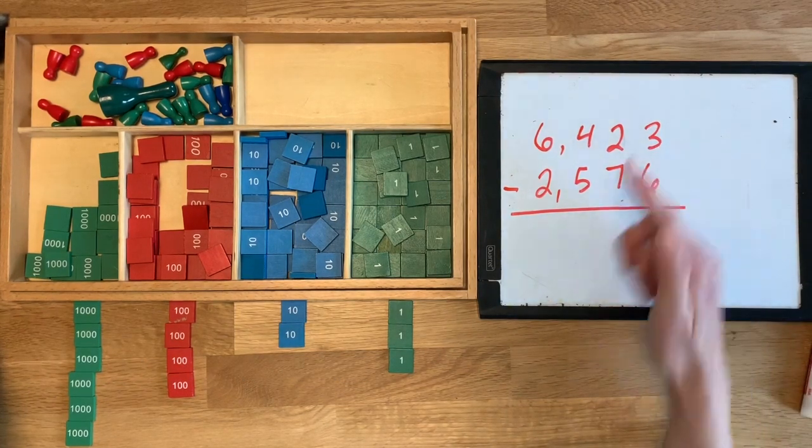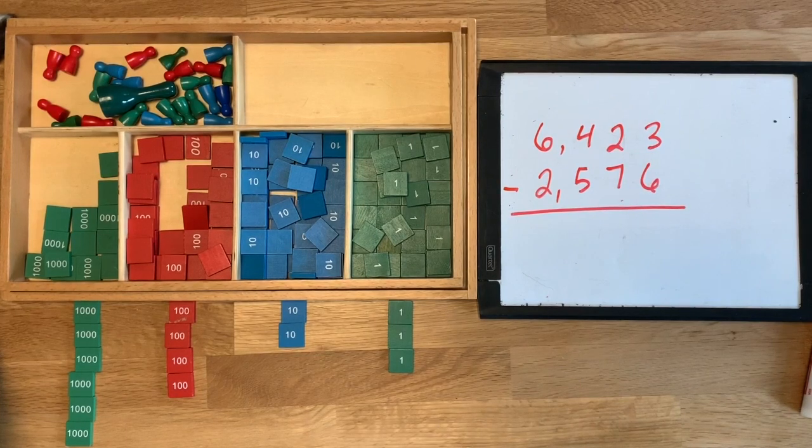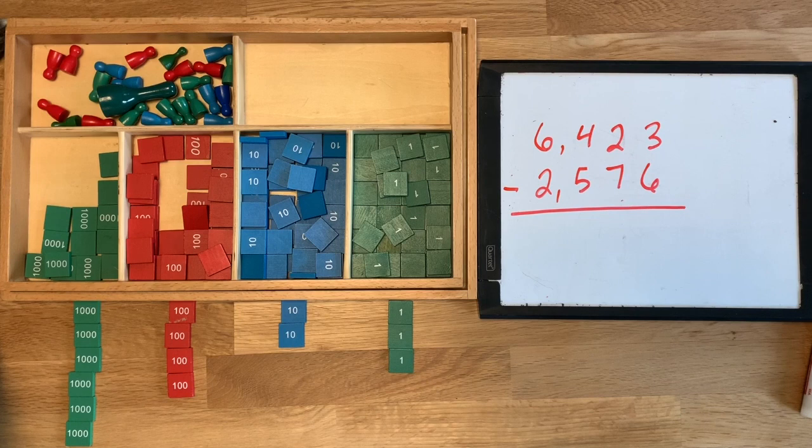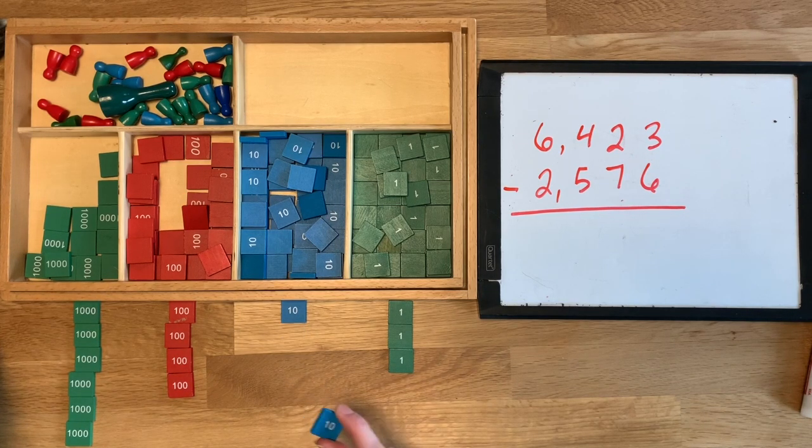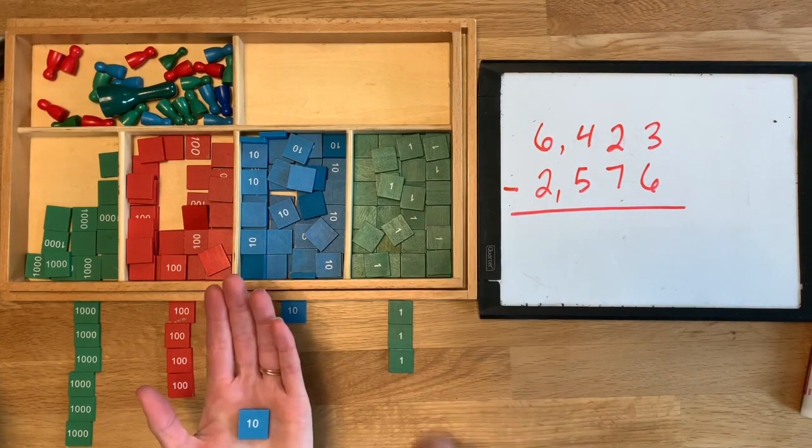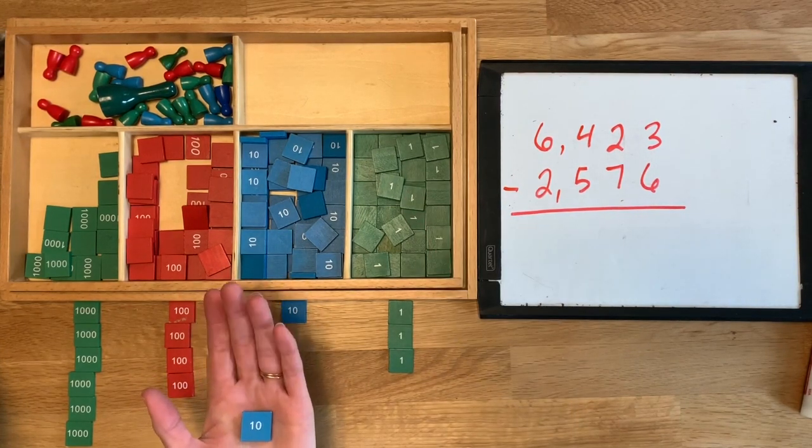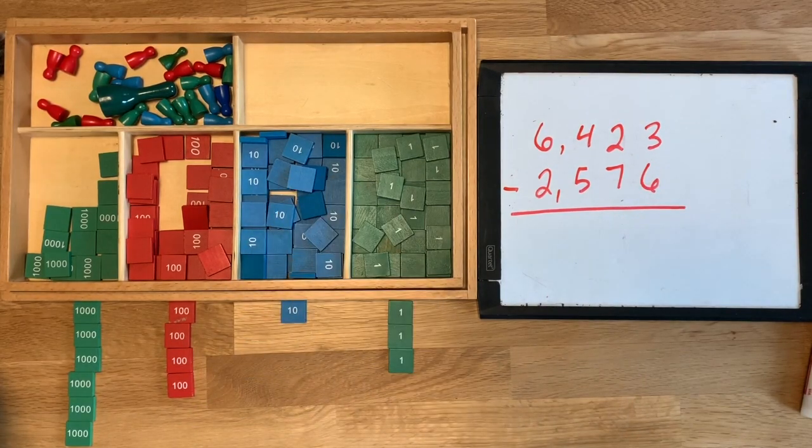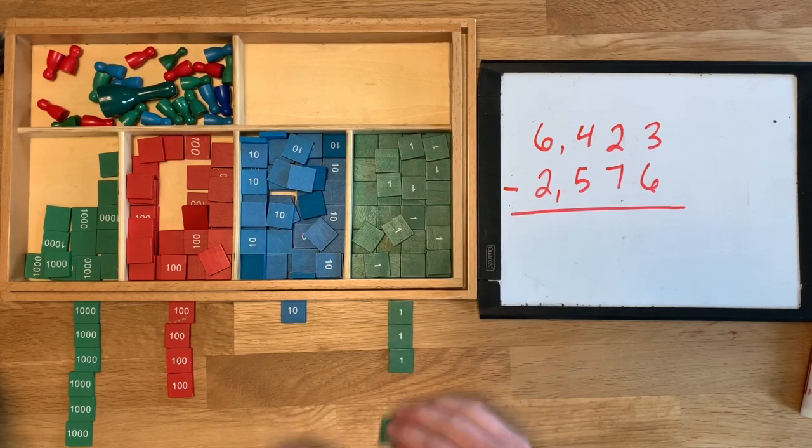So we need to take six away from three, but do we have enough? No, we can't take six from three. So we have to borrow from the neighbor. Do you remember how many units equals one ten? Ten. So if I borrow a ten from the neighbor, if I borrow one ten, I can get ten units out and put them down here. And then will I have enough to take six away? Yeah. So I'm going to put one ten back and get ten units out.